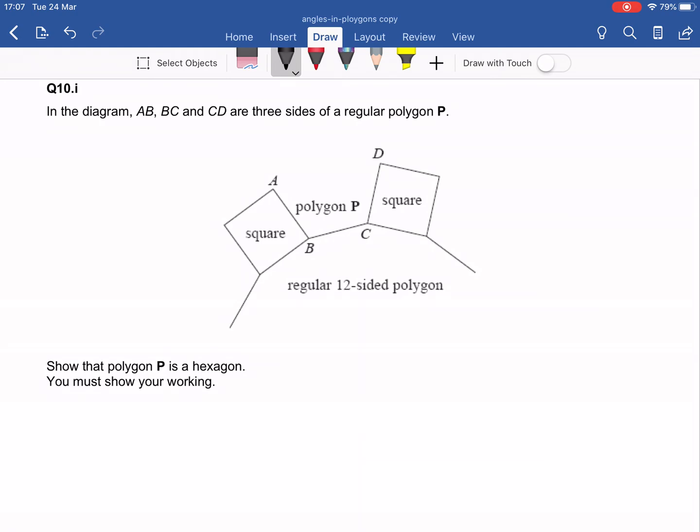I've got a diagram and I've got AB, BC and CD are three sides of a regular polygon P here. And I need to show that polygon P is a hexagon. I need to show my work here.